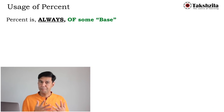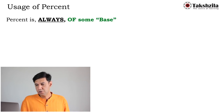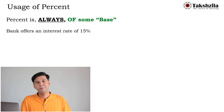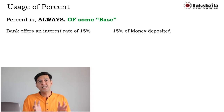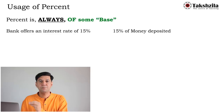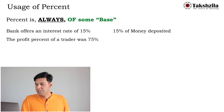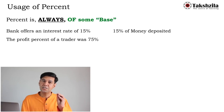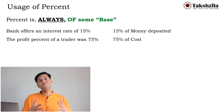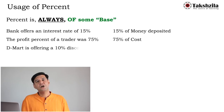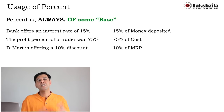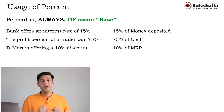More everyday examples: a bank interest rate of 15% means 0.15 times the deposited or loaned amount. A profit percentage of 75% means 0.75 times the cost price (the investment). A 10% discount at D-Mart means 10% off the MRP — so 0.1 times the listed price is the discount. In each case, the percentage has a clear base it refers to.